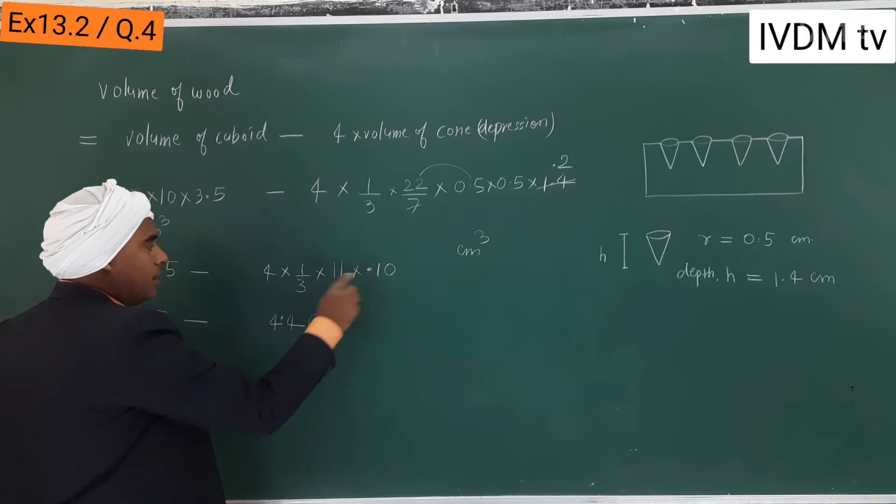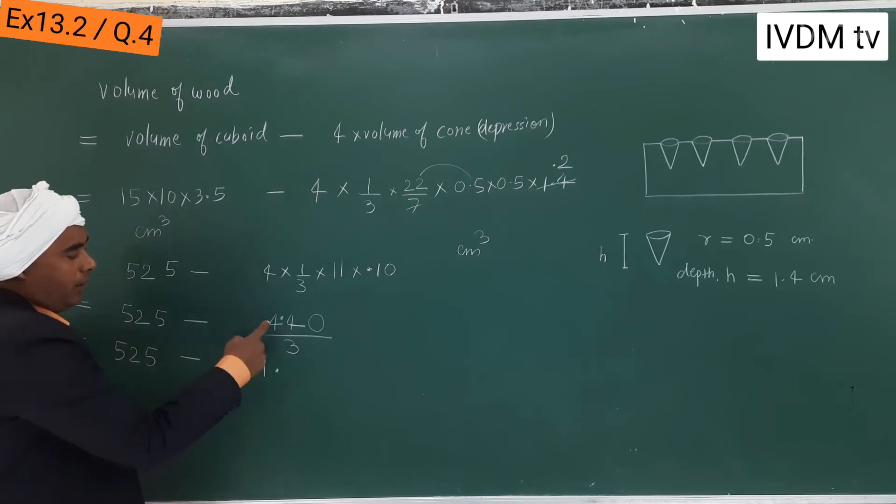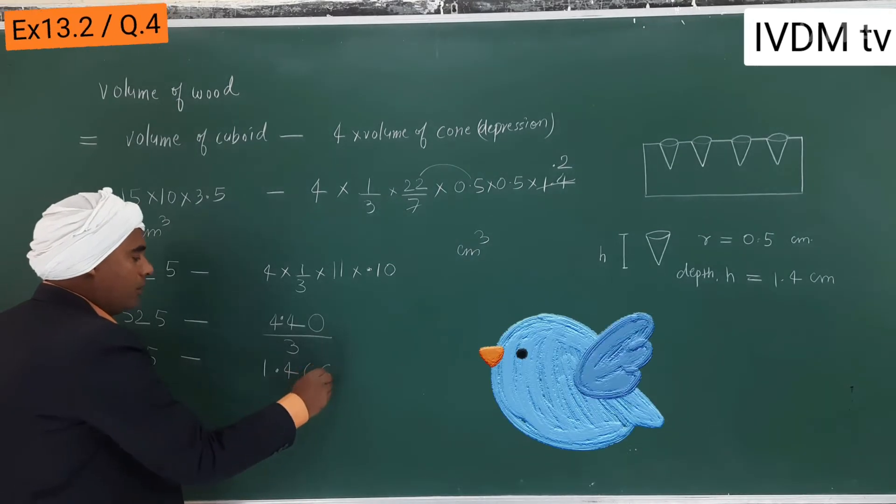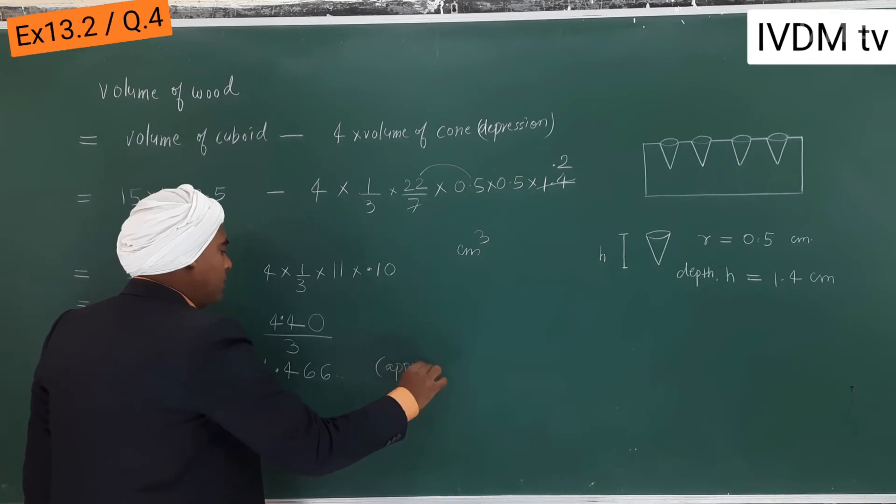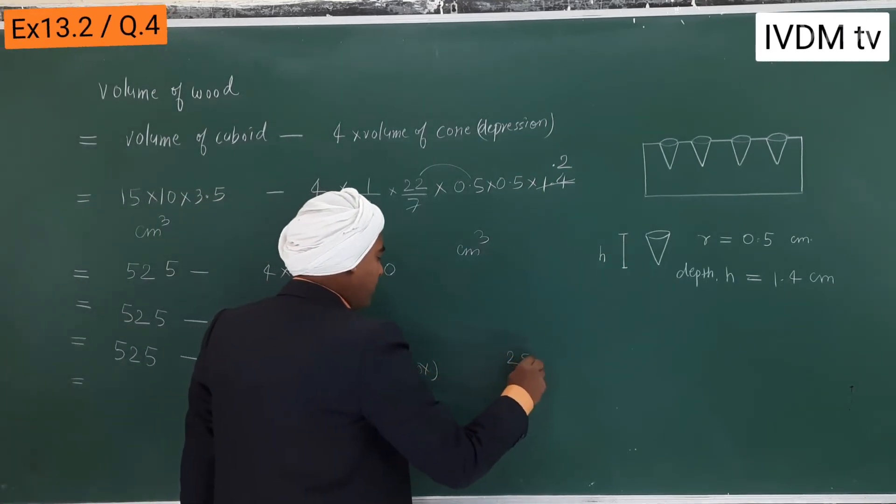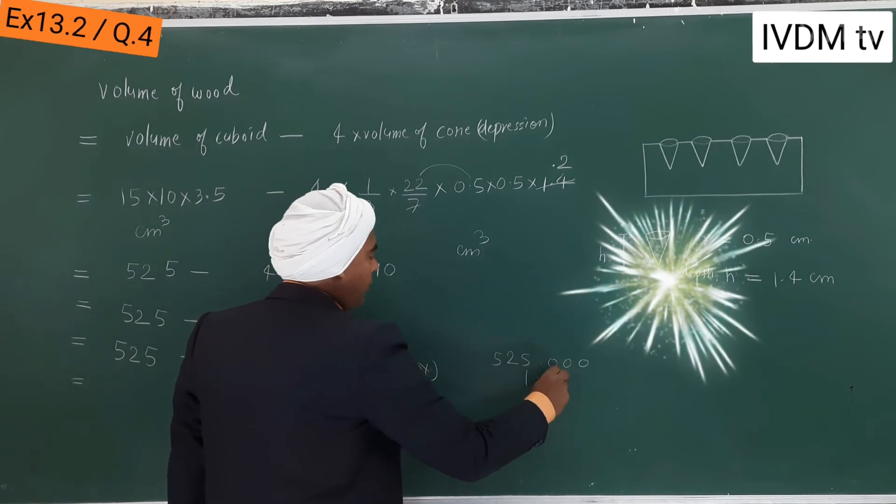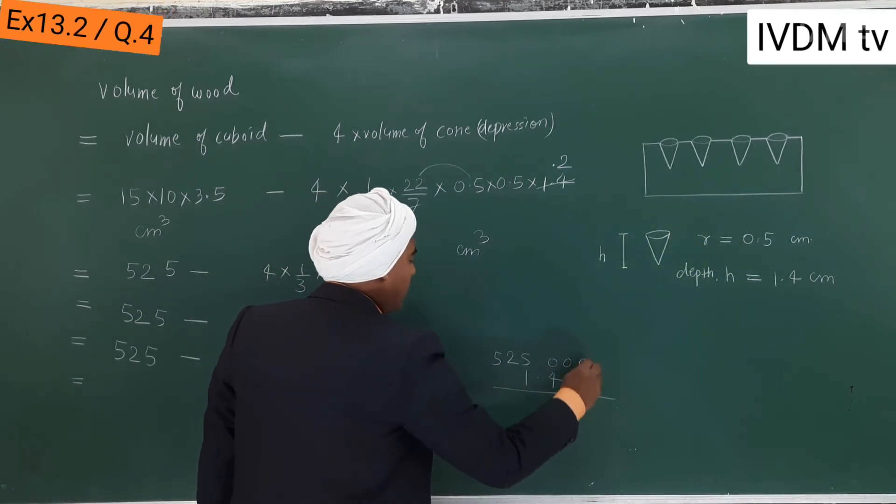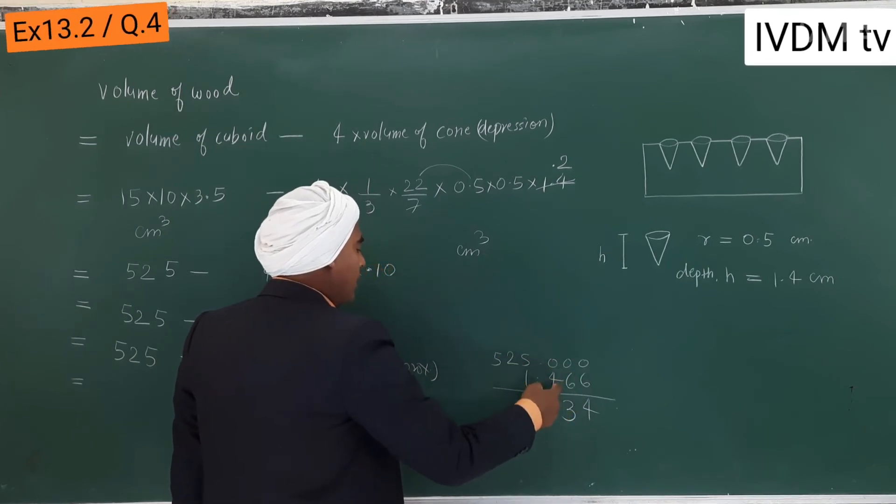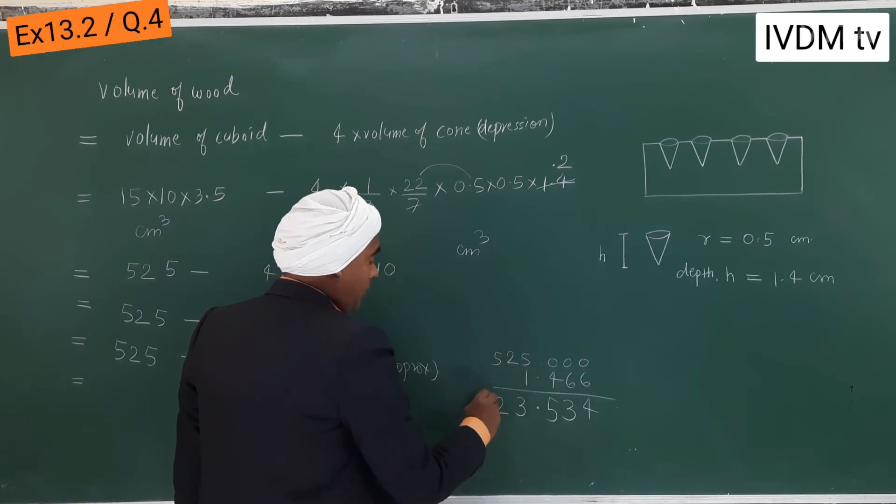This is 44... 0.2 decimal, then three... like this, approximately. Minus means... like this, 1.46.